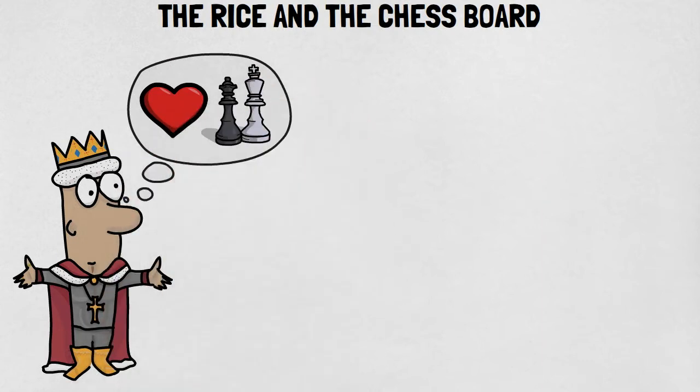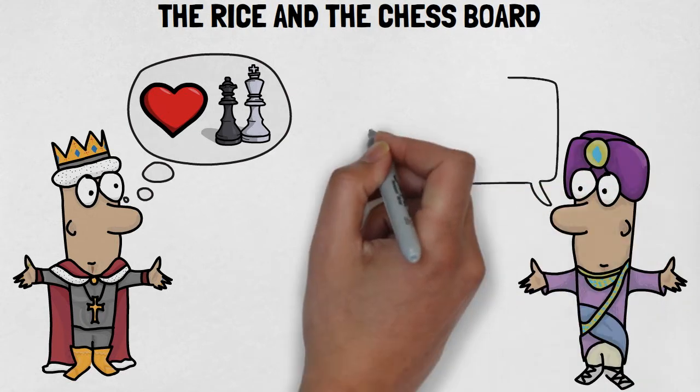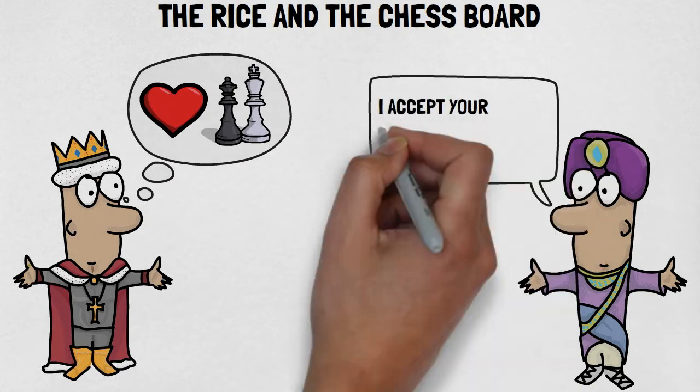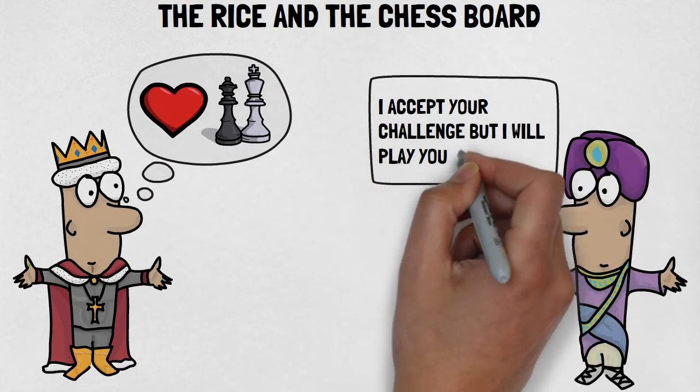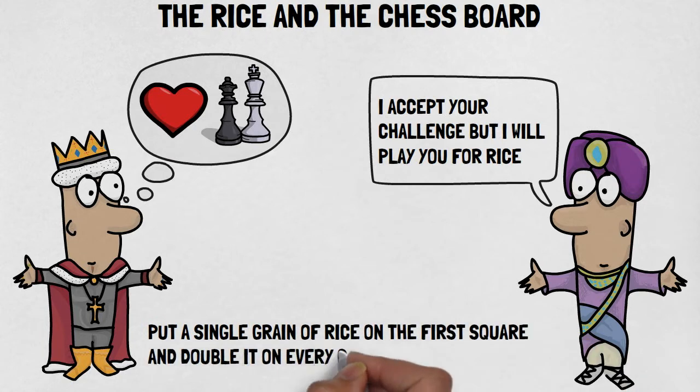The sage, having played this game all his life with people all over the world, gladly accepted the king's challenge. To motivate his opponent, the king offered any reward that the sage could name. The sage modestly asked just for a few grains of rice in the following manner.